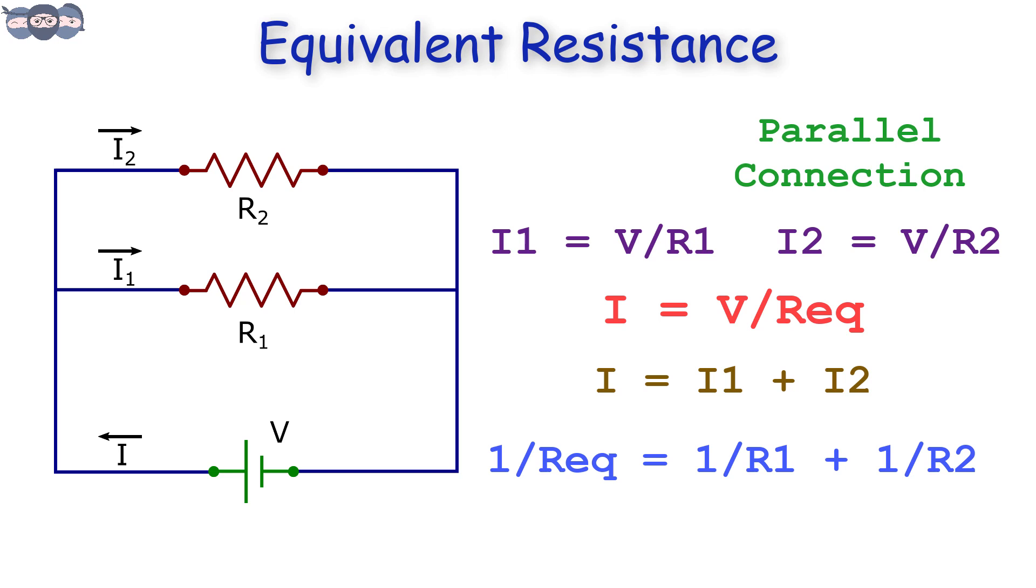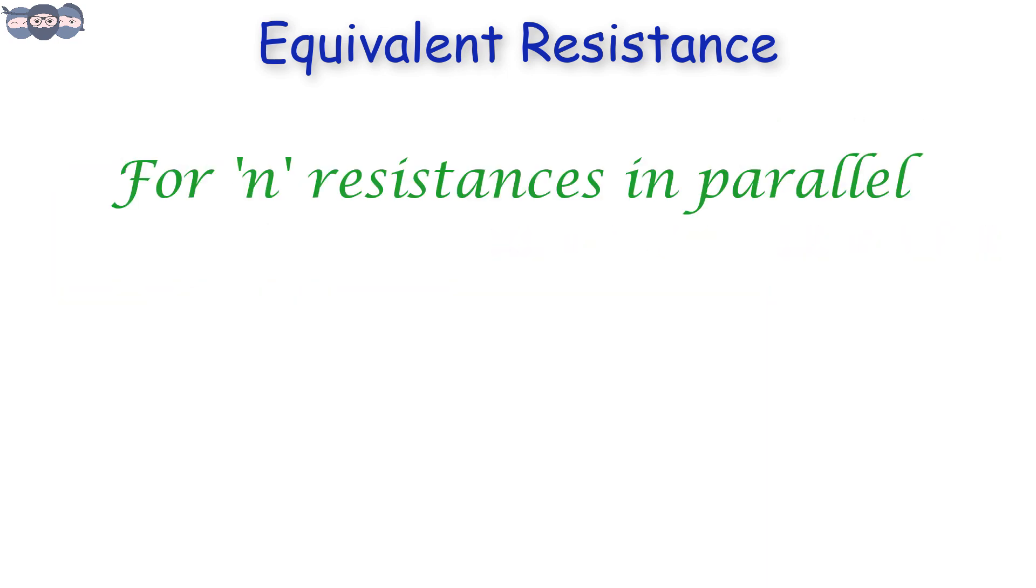This is the parallel equivalent resistance. The same formula can be extended to N resistances in parallel. 1 upon R eq equals 1 upon R1 plus 1 upon R2 till 1 upon Rn.